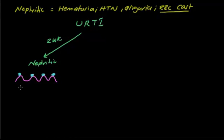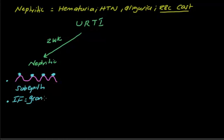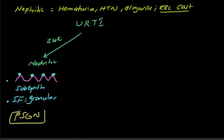This is called a sub-epithelial deposit. On electron microscopy, you see sub-epithelial deposits, and on immunofluorescence the pattern will be granular. Based on this — upper respiratory tract infection followed two weeks later by nephritic syndrome with sub-epithelial granular deposits — we call this post-streptococcal glomerulonephritis.